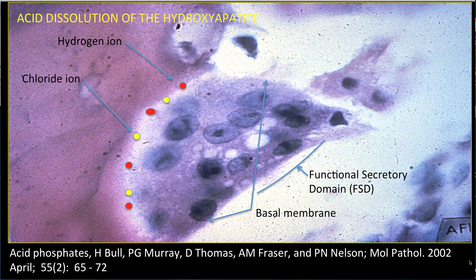The chloride ion has entered the cell in exchange for bicarbonate and moves to the ruffled border and into the resorption vacuole via a channel charge-coupled to the H+-ATPase, thus generating the hydrochloric acid which produces the required ambient pH. The acidity mobilizes the mineral phase, exposing the organic matrix of bone. The cell is filled with multitudes of mitochondria, which provide the ATP for the significant energy required for bone dissolution.